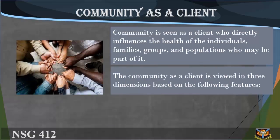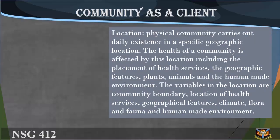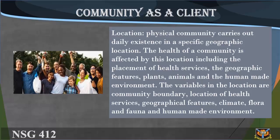Community as a client. The community is seen as a client who directly influences the health of the individuals, families, groups, and populations who may be part of it. The community as a client is viewed in three dimensions: 1. Location; 2. Population; 3. Social system. A physical community carries out daily existence in a specific geographic location. The health of a community is affected by this location, including the placement of health services, geographic features, plants, animals, and the human-made environment. The variables in the location are community boundary, location of health services, geographical features, climate, flora and fauna, and human-made environment.